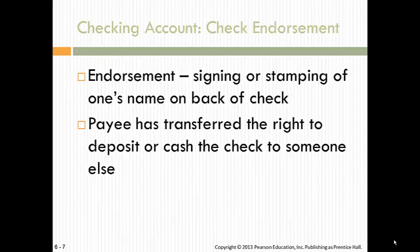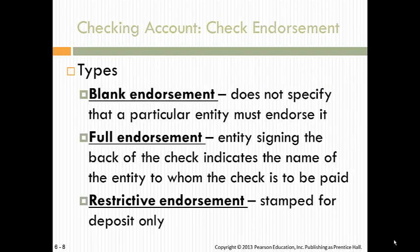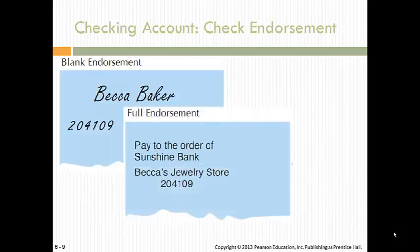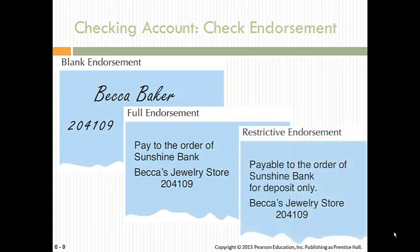An endorsement is signing or stamping one's name on the back of the check, and a payee has transferred the right to deposit the check to someone else. There are types of endorsement: a blank endorsement does not specify that a particular entity must endorse it; a full endorsement requires you to sign the back of the check with the name of the entity to whom you're paying; and then there's a restrictive endorsement. So there are different options that companies will implement.